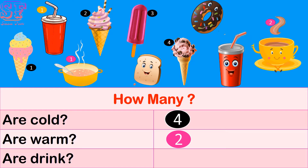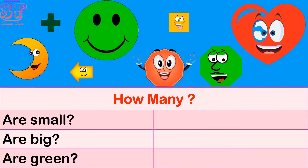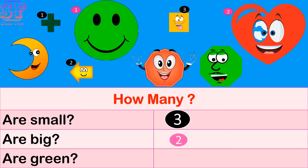How many are green? One, two, three — three small. How many are big? Can you see? One, two — two big. How many are green? One, two — two green.